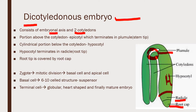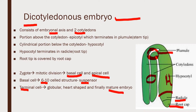The zygote undergoes mitotic division to form two cells — the basal cell and the apical cell. The basal cell forms a 6 to 10 cell structure called the suspensor. The terminal cell progresses through globular and heart-shaped stages to finally form the mature embryo, which is made up of two cotyledons; hence the name dicot embryo.